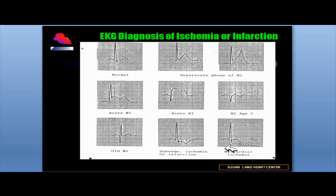Another condition to keep in mind is symmetrically inverted T waves. When the down slope and up slope of the T wave are symmetrical, and when the depth of the T wave is more than five millimeters and the width is large, it represents ventricular ischemia. We generally see this type of T wave change in the anterolateral leads, suggestive of anterolateral ischemia. A differential diagnosis for T wave inversion is intracranial hemorrhage, which can result in giant negative T waves in the chest leads.